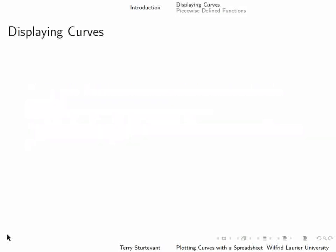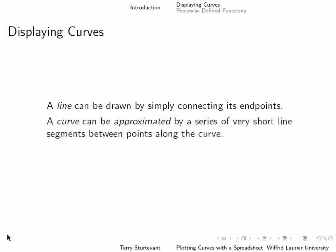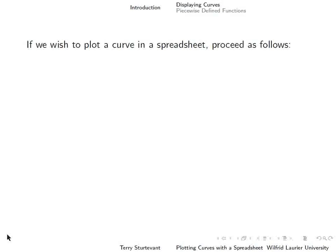A line can be drawn by simply connecting its endpoints, and a curve can be approximated by a series of very short line segments between points along the curve. If the points are close enough, the line will look smooth. So if we want to plot a curve in a spreadsheet, proceed as follows.